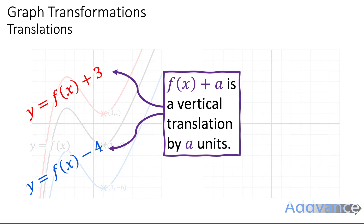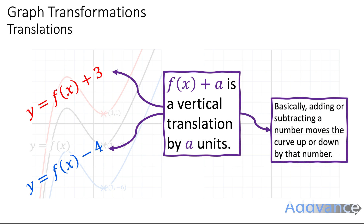What we can say is: f of x plus a is a vertical translation by a units. That means adding or subtracting a number from the equation of the curve moves you up or down by that number.